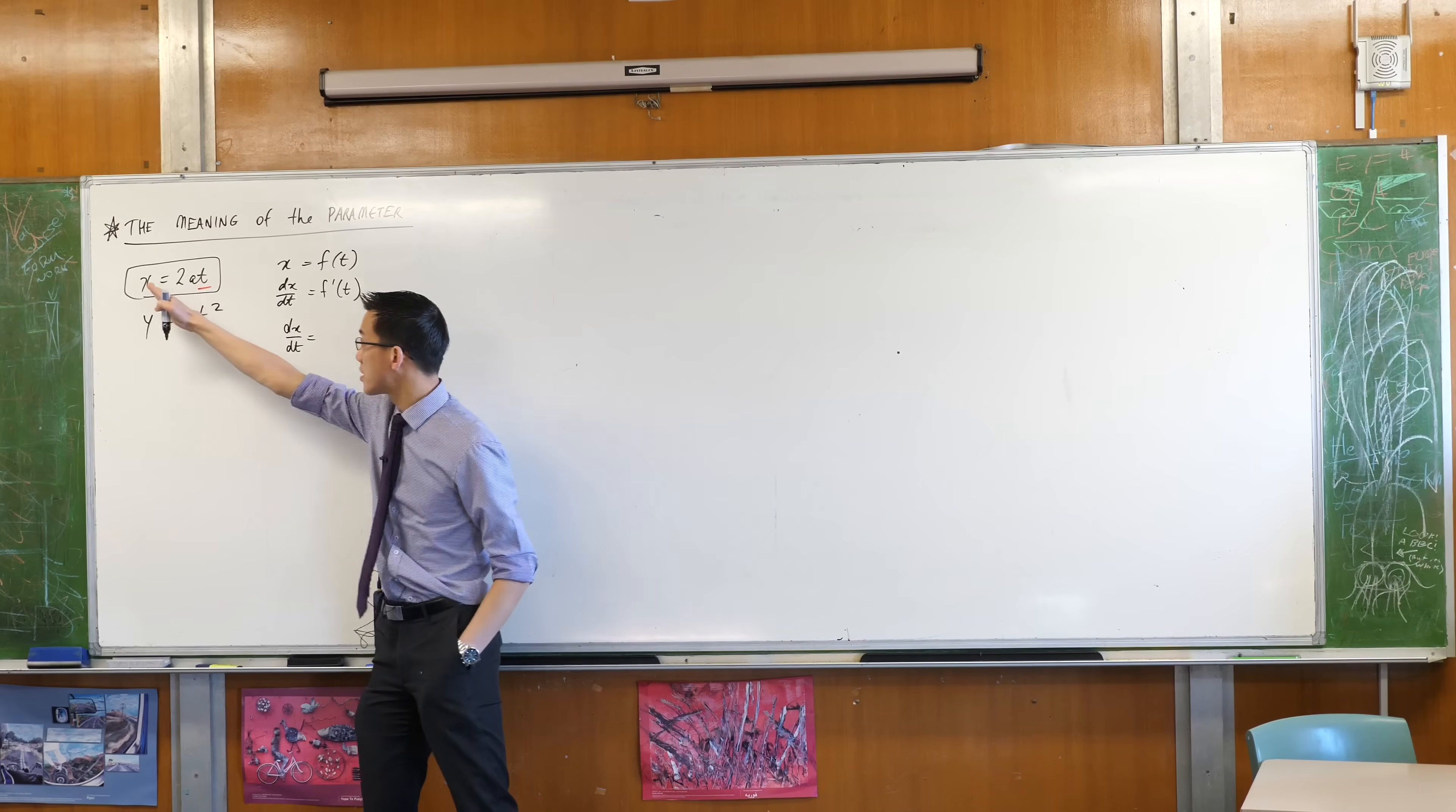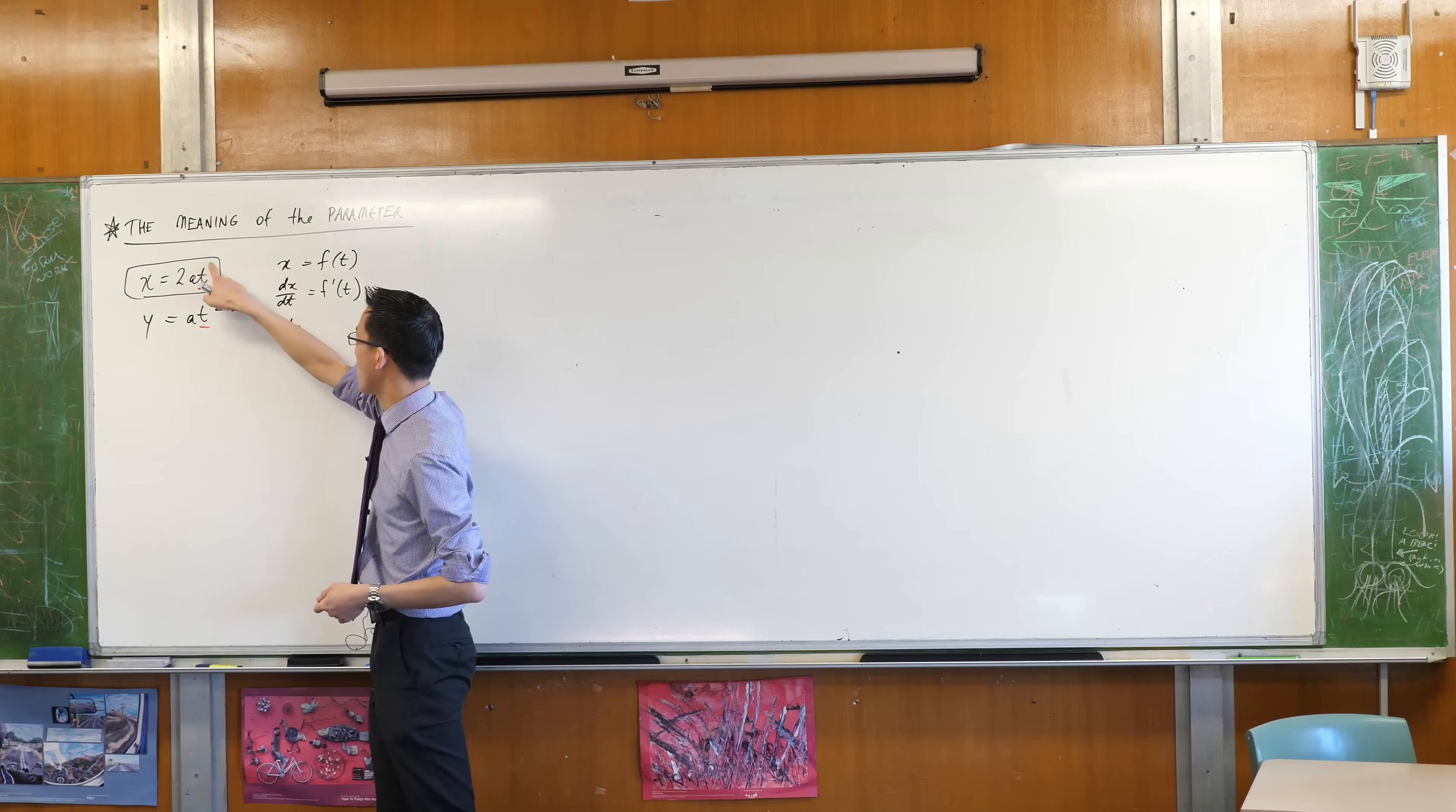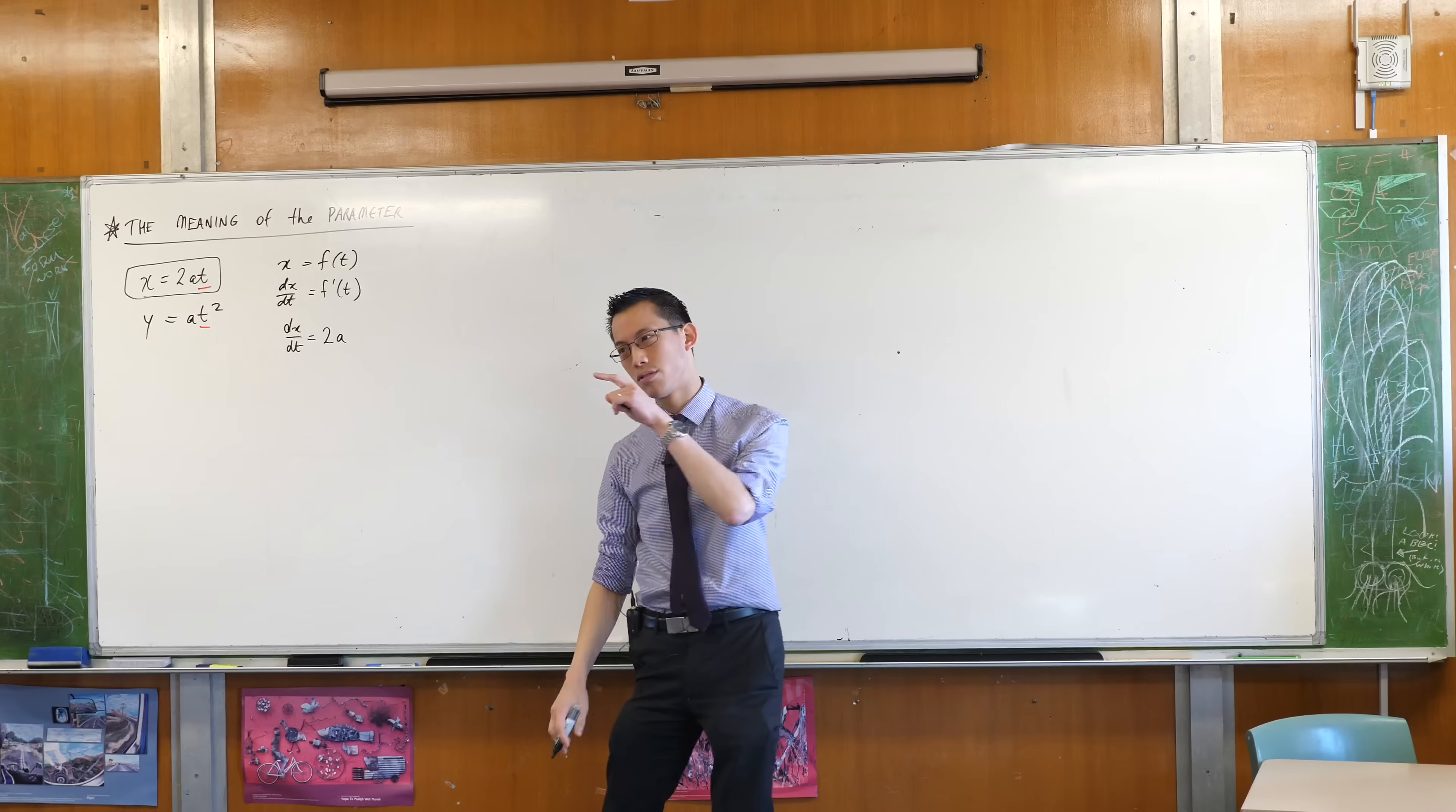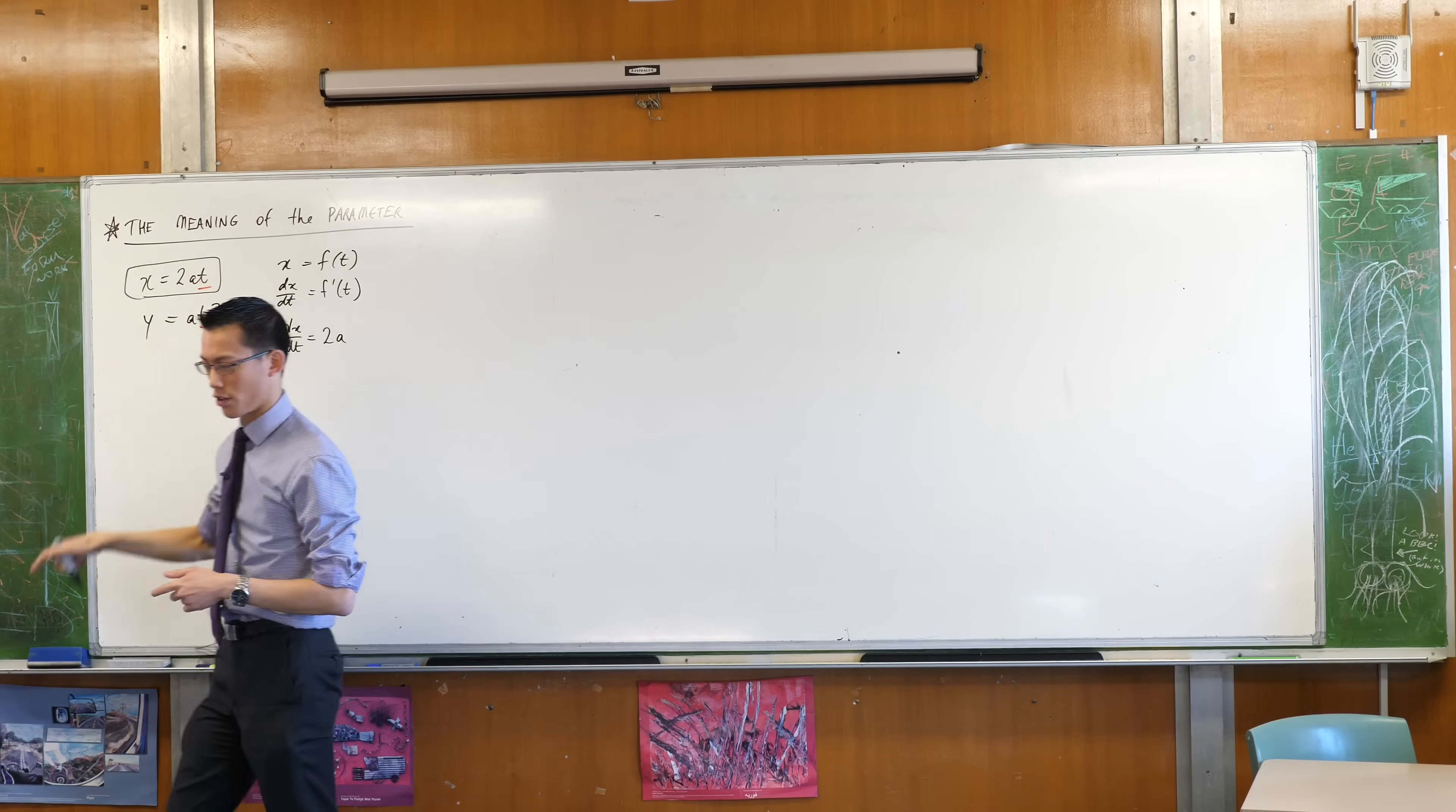This is just a constant times T. Well when you differentiate, like this is a power rule, right, your power one. Yeah, it's just 2A. There's your derivative with respect to T, with respect to the parameter, when you have a look at the X function.